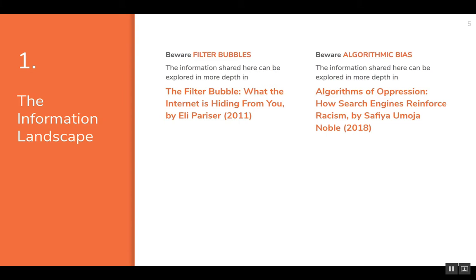In this information landscape, we want to be aware of two main things: filter bubbles and algorithmic biases. For more information about filter bubbles, see Eli Pariser's book from 2011 called The Filter Bubble: What the Internet is Hiding From You. Even though it's almost 10 years old, it is really accurate. For algorithmic bias, this is based on research from Dr. Safiya Umoja Noble, who published a book called Algorithms of Oppression: How Search Engines Reinforce Racism. She focuses specifically on racism and sexism inherent in algorithms, but it's important to be aware of biases written into algorithms that we sometimes just take for granted.